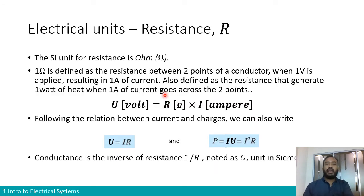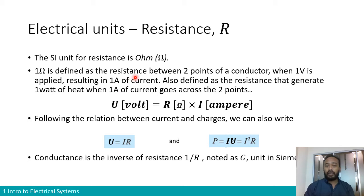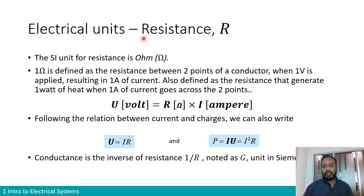Now that we have thoroughly covered the definition of voltage and current and looked at the measurement instrumentation and units, let's talk about the parameter that relates voltage and current, which is basically resistance. The SI unit for resistance is the ohm, represented by the Greek letter omega.